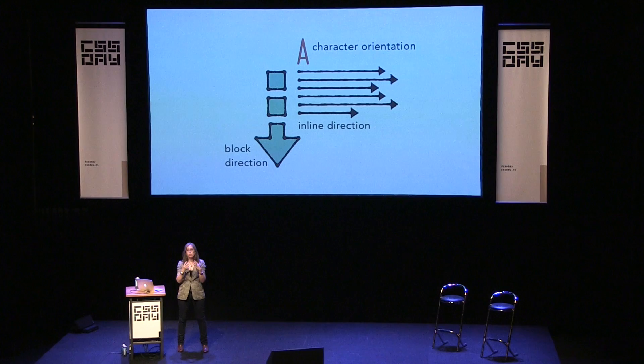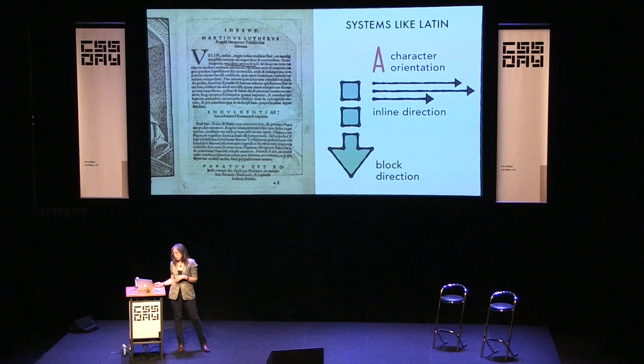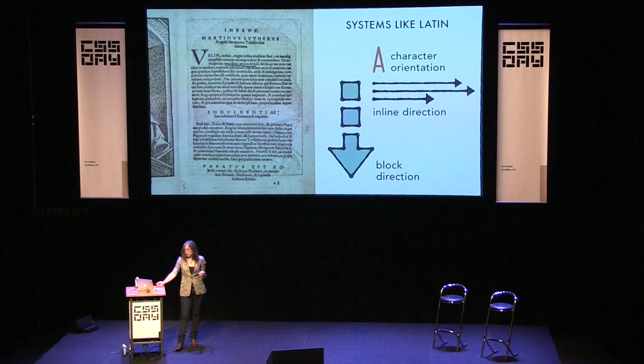If you combine those three things — character orientation, inline direction, and block direction — Latin alphabets and actually the majority of scripts around the world work in the same system: the system for English, the system the web was born knowing how to do. It's also for Cyrillic and all its languages, Brahmic scripts, Tibetan, Thai, many African scripts including Ethiopian. It's really a majority of the world — all the languages dominant in the blue areas on this map.